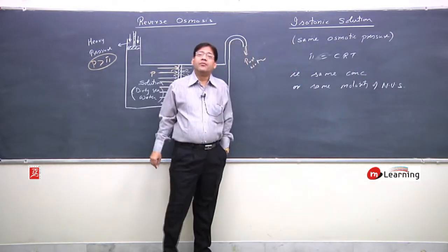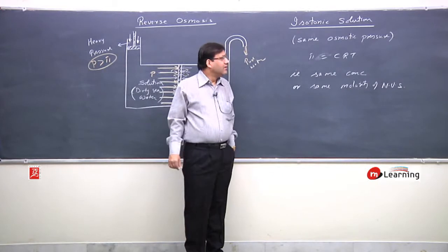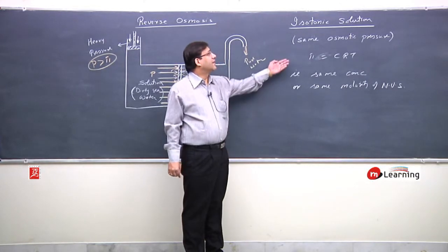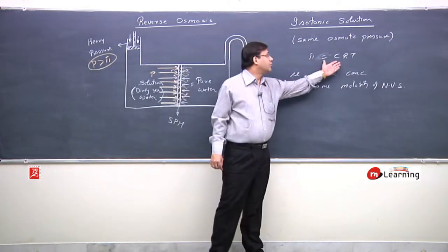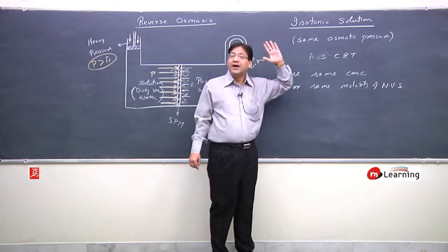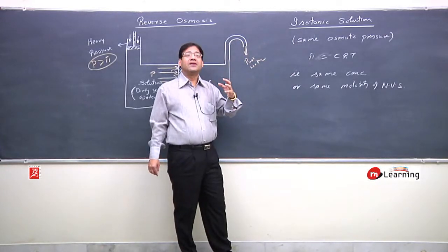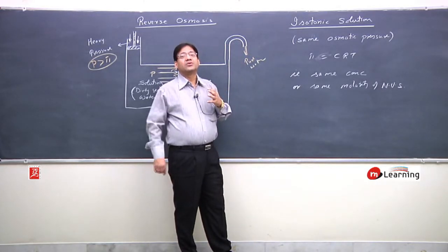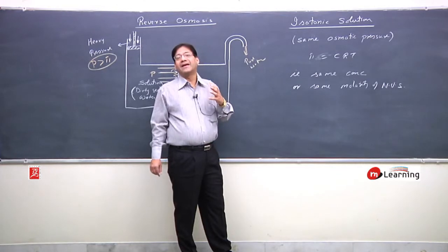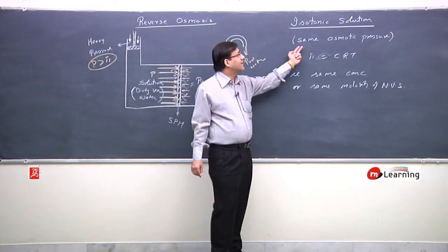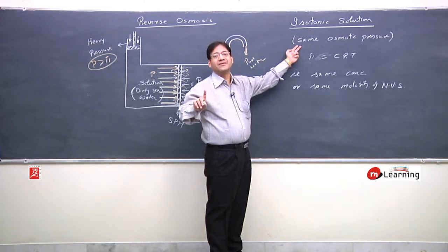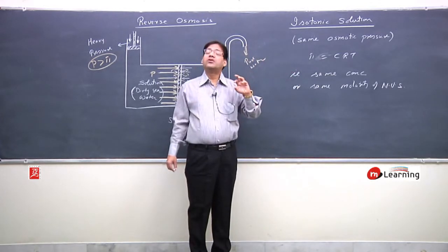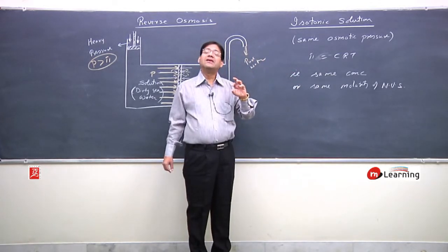So we have two solutions. If the two solutions have the same molarity, the non-volatile solute's molarity is the same, then the concentration is the same. And if the concentration is the same, the osmotic pressure is the same. When we do problems, we will see the isotonic word, and we will simply conclude that we have to equate the osmotic pressure and the concentration, the molarity of the non-volatile solute.